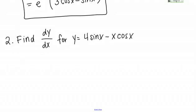Number 2: find dy/dx for y equals 4 sine x minus x cosine x. This function is made up of two pieces. First we have 4 sine x — that won't be too bad to differentiate; the 4 is just a constant, so we'll pull that out front. For x cosine x, we're going to have to use the product rule.